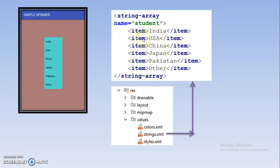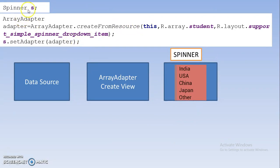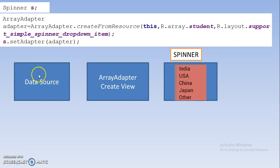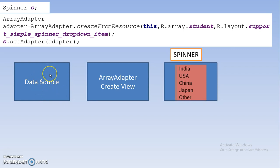This string array file is present in the values folder as strings.xml. Just double-click and add the code. Here we have added around six elements. After that, in your activity file you simply create the Spinner object. The key statement uses ArrayAdapter, which we will discuss now. There are two main ways to add data to a Spinner: through XML using a string array, or through Java by declaring the array in the activity class. In this tutorial we are discussing how to load elements from the string array in the XML file.